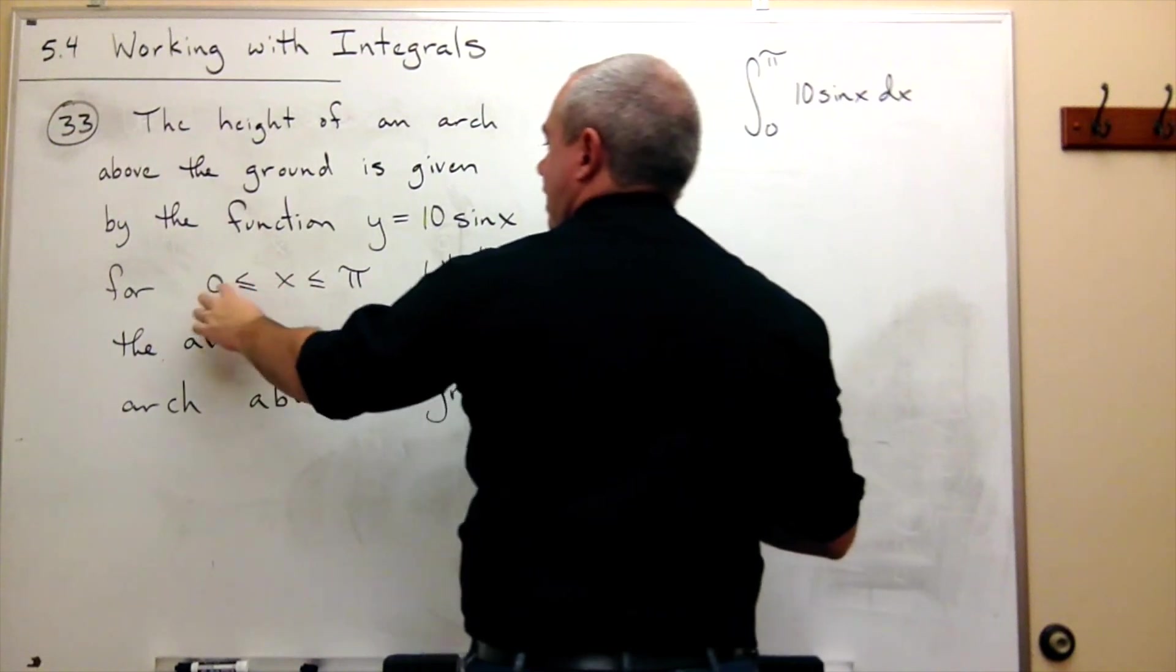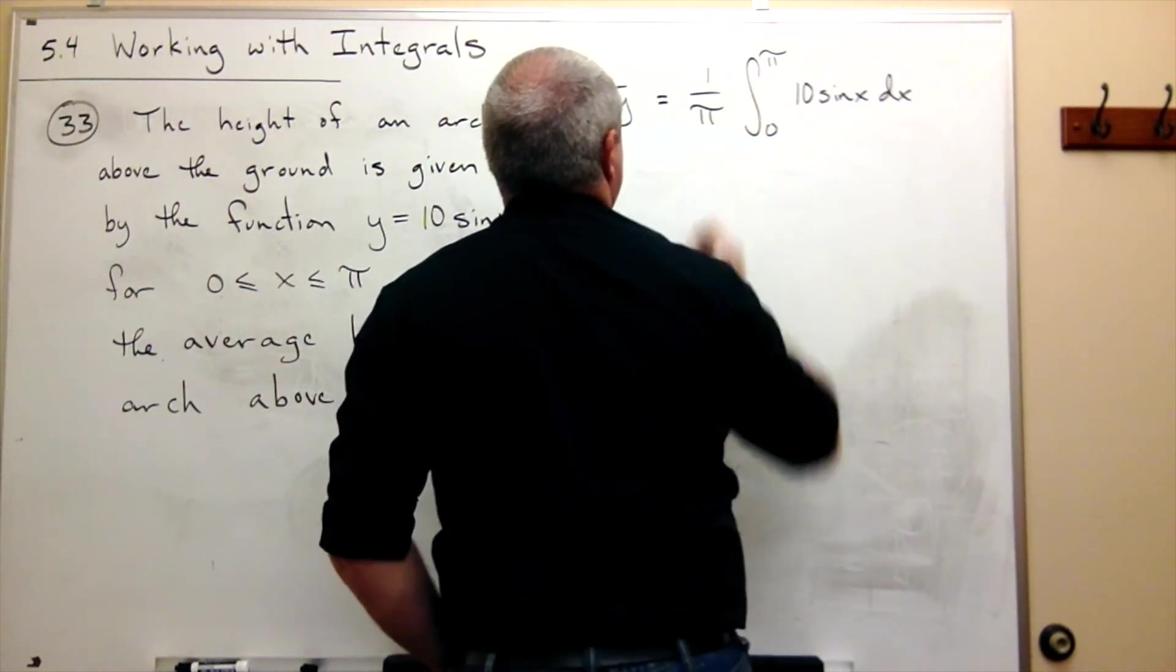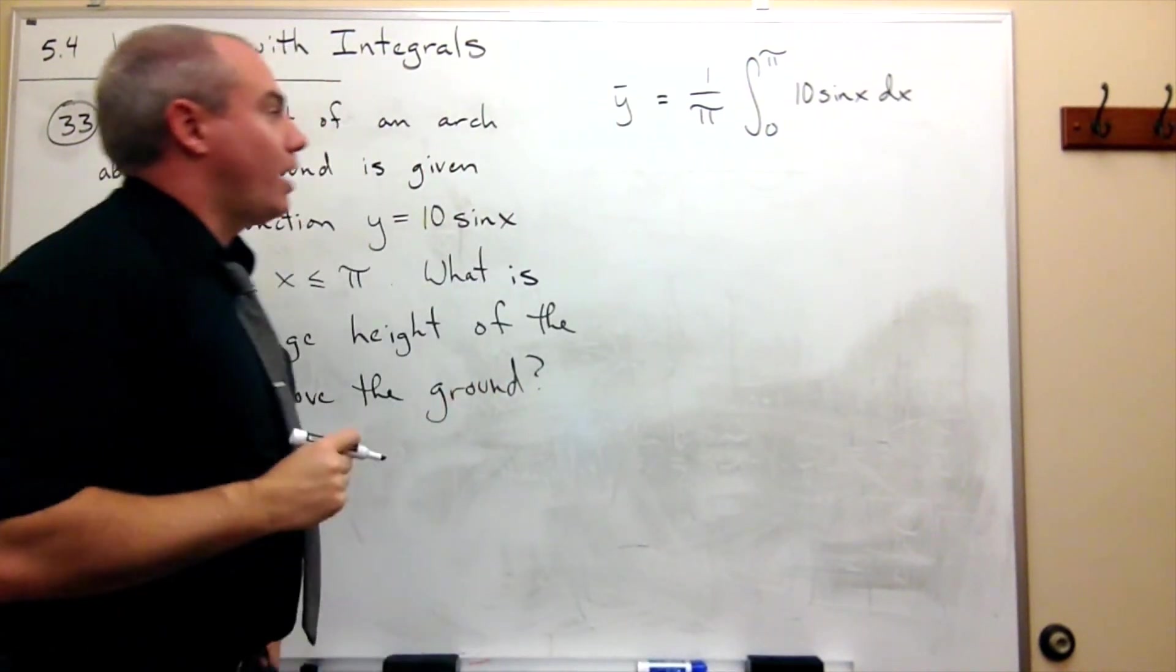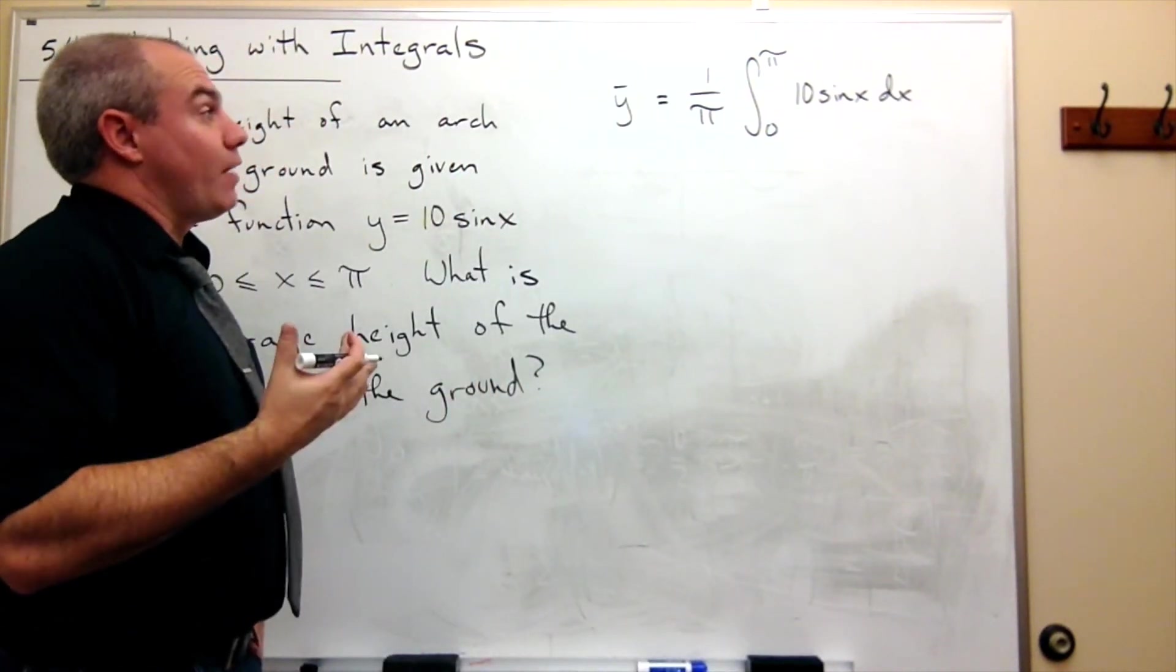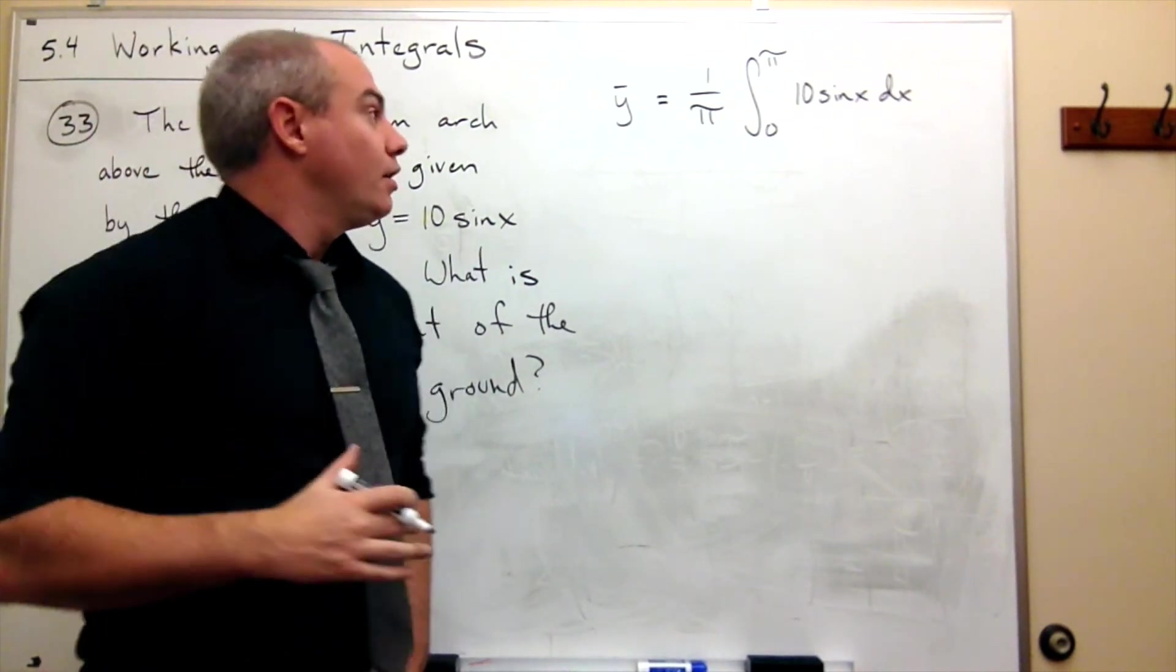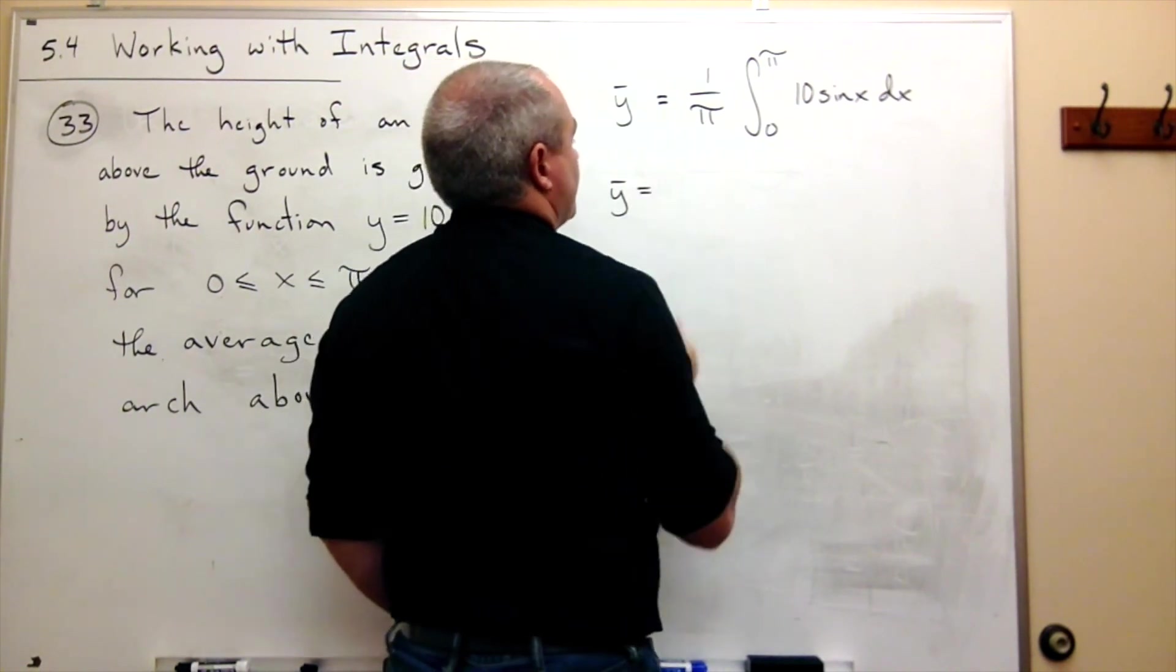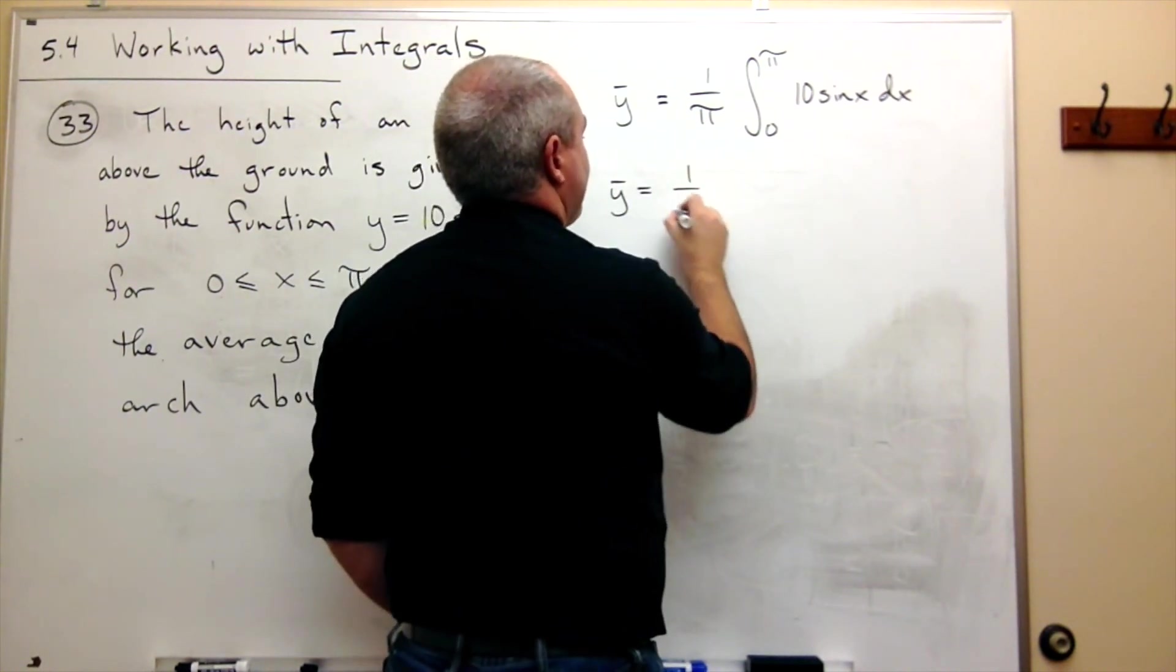And that will give me my average height above the ground. So let's do it. We get that y bar equals 1 over pi times—well I could just pull this 10 out if I wanted to.